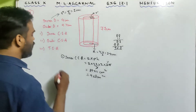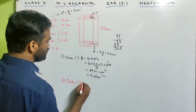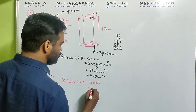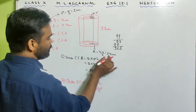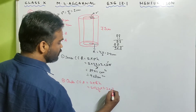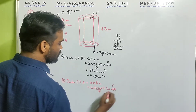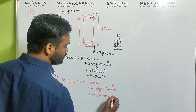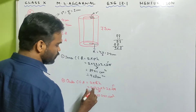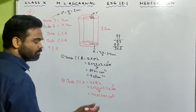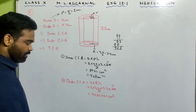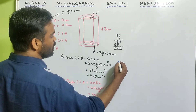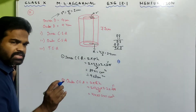Number 2: outer curved surface area = 2πRh. Substitute: 2 × (22/7) × 2.2 × 77. Simplifying, that's 44 × 2.2 × 11 centimeter square. Solve it to get the answer.